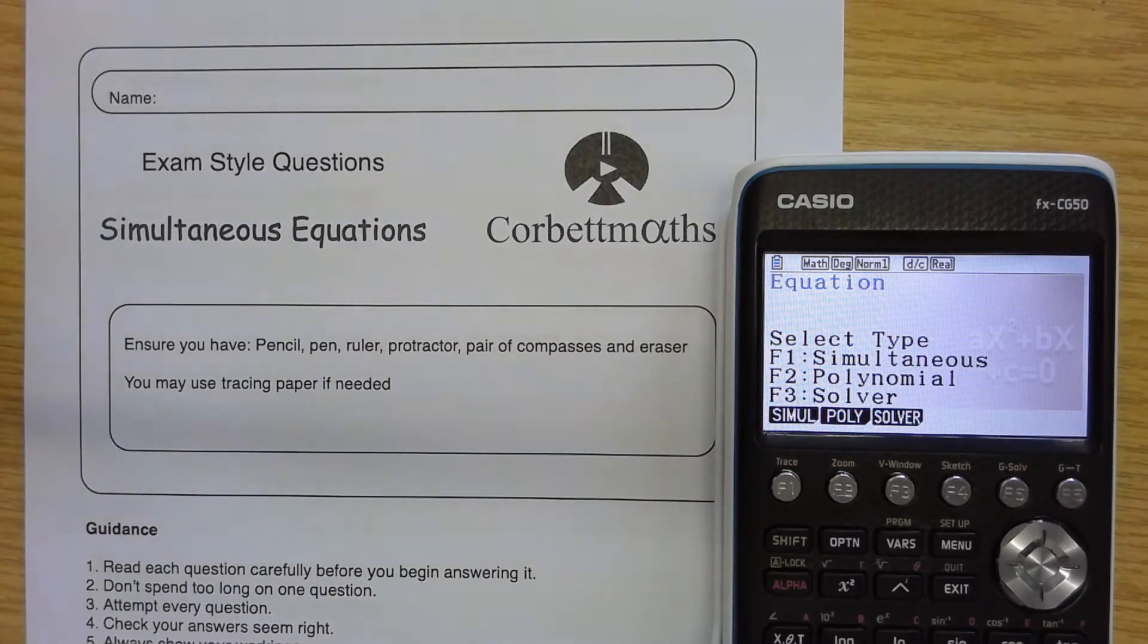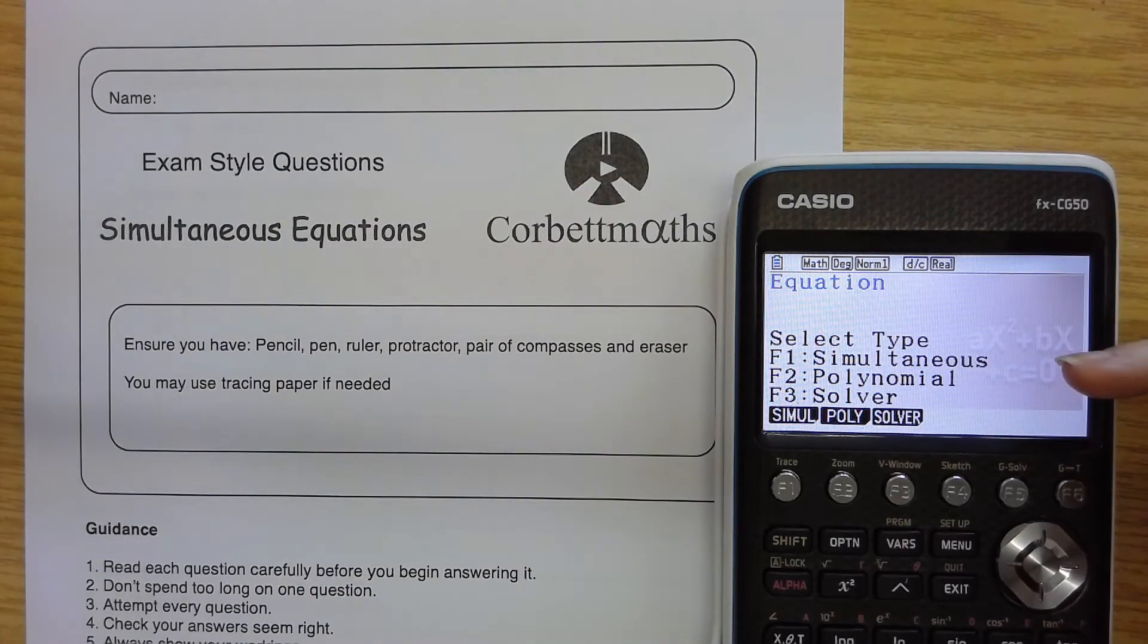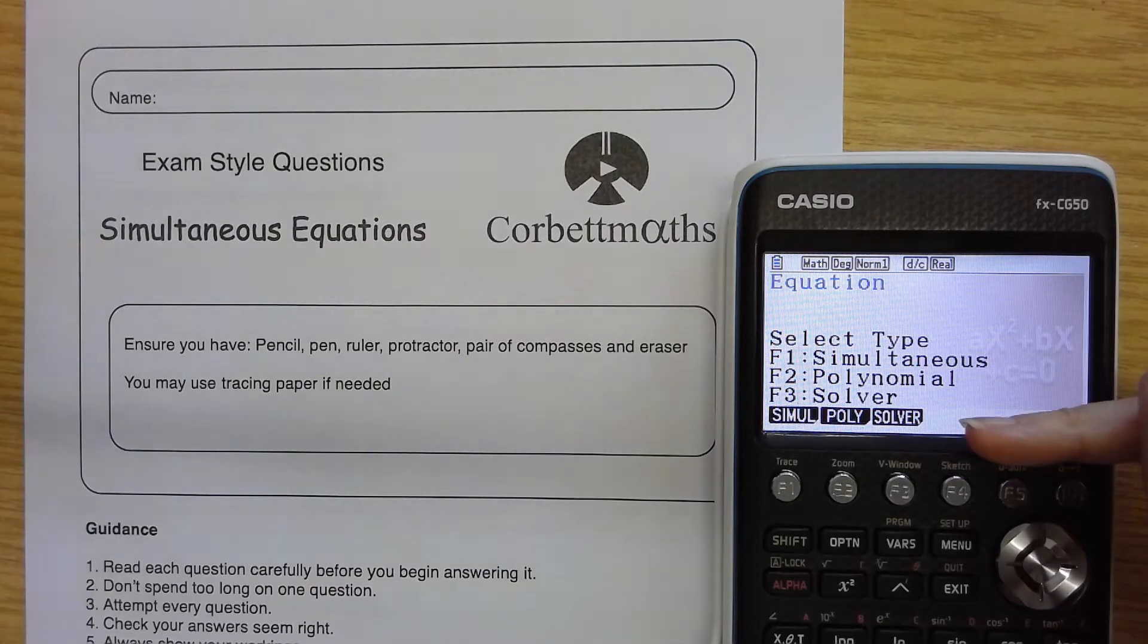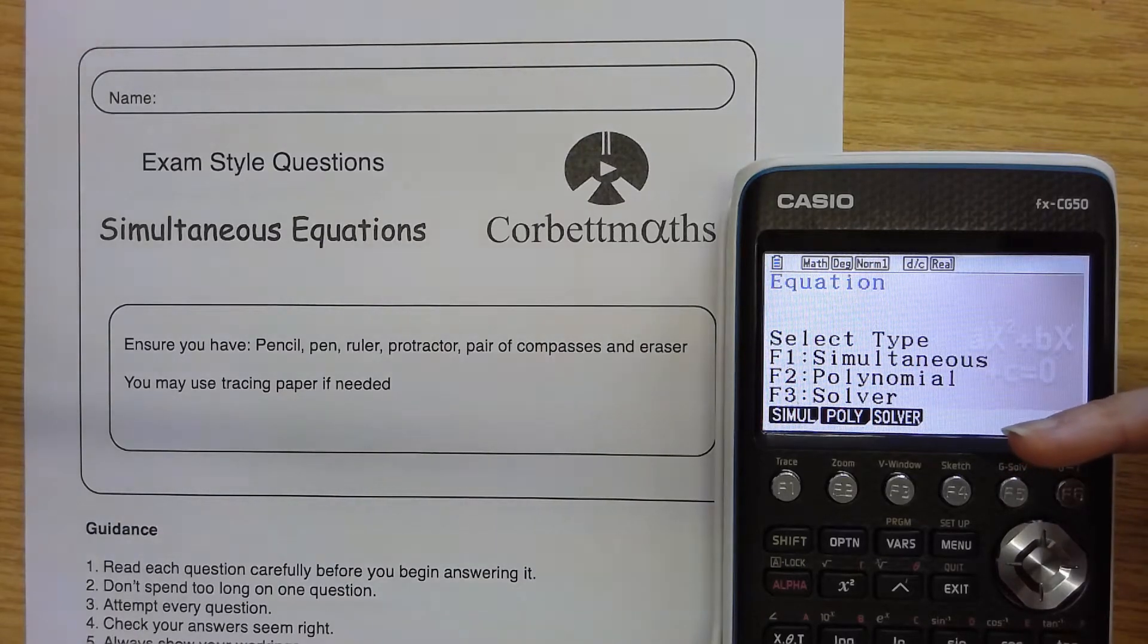Now there are three separate submenus I can go to. I can solve simultaneous equations, I can solve polynomials, and there's Equation Solver there at the bottom. I rarely use that. I did use that when I was doing some work with teaching A-level classes and some SUVAT equations, but on the whole, I haven't used it at all for GCSE.